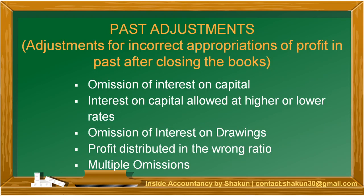In case of these errors and omissions, we cannot do any cutting in our books of accounts. In order to rectify these errors, we have to pass a journal entry. This particular journal entry will alter the partner's capital account in such a manner that the error is rectified and the partner's capital account also shows the correct balance.